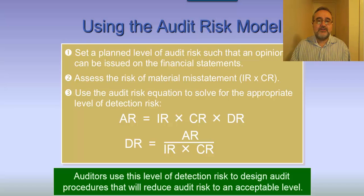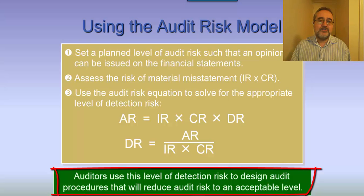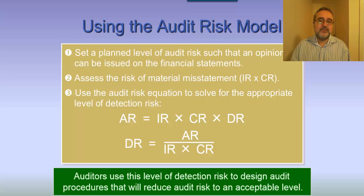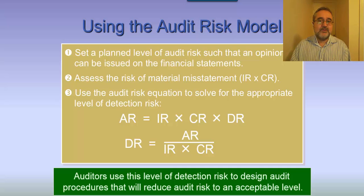The auditor uses this level of detection risk to design audit procedures that will reduce audit risk to an acceptable level. When we talk about detection risk, what we're talking about is how the auditor designs the nature, timing, and extent of the substantive procedures. When we are conducting a risk assessment and looking at internal controls, we are looking at this from the perspective of understanding the risk of material misstatement.